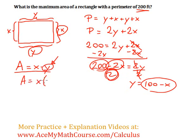So we get A equals X times 100 minus X. Now I can distribute the X. So I get X times 100, 100X, X times negative X, negative X squared.